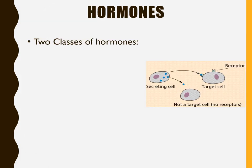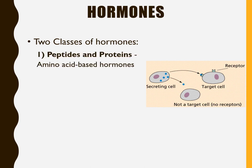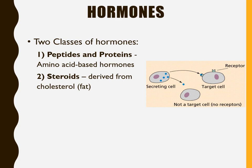All of these glands produce and secrete hormones, and we have two classes. One is a peptide or protein hormone, meaning they are amino acid-based. The other class is steroids, which are derived from cholesterol — essentially fat-based hormones. So we have protein-based hormones and fat-based hormones.